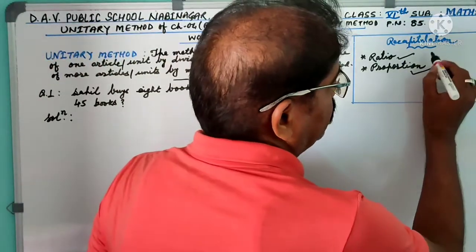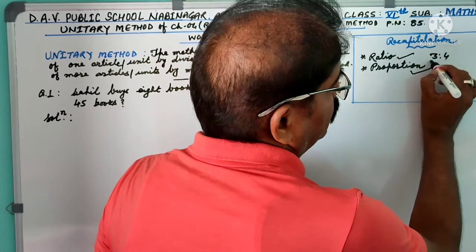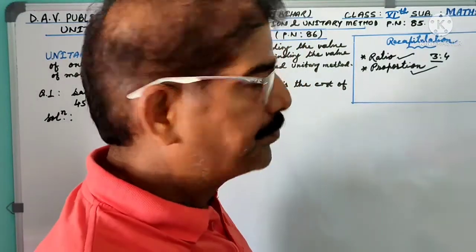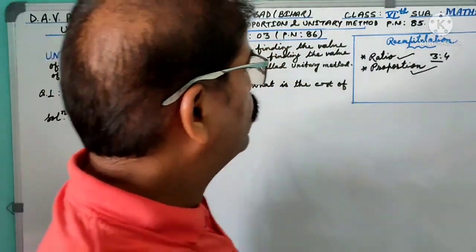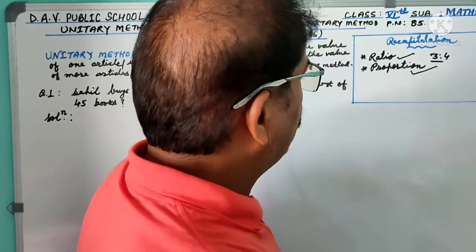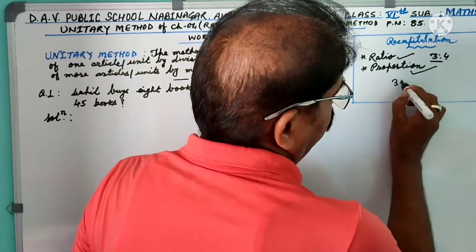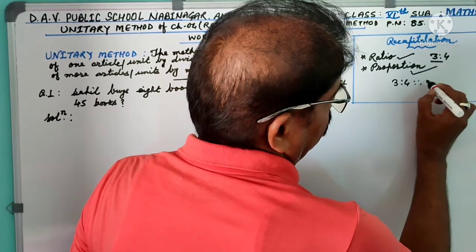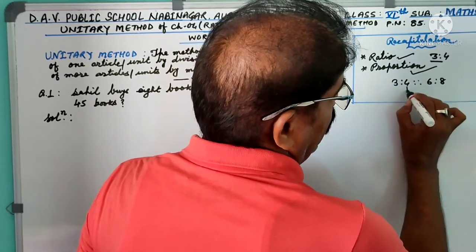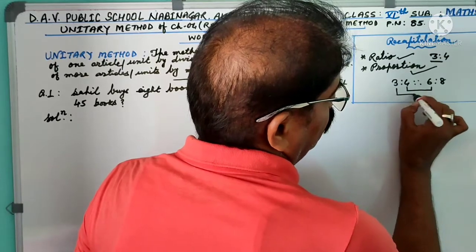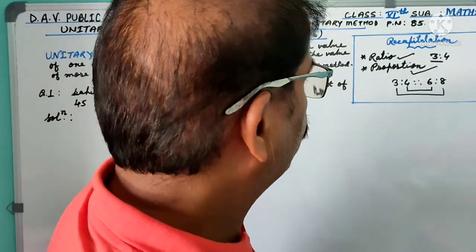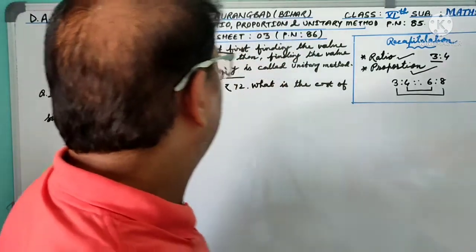Comparing two quantities by division is known as ratio, such as 3 is to 4. And proportional: comparing two quantities of ratio is known as proportional, such as 3 is to 4 as 6 is to 8. That means product of means is equal to product of extremes. These are known as proportional, and now new topic is unitary method.